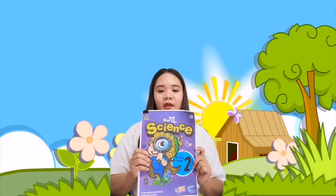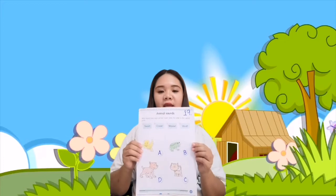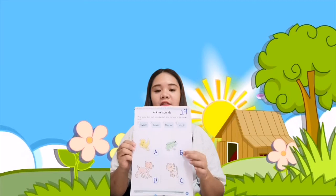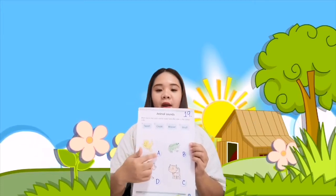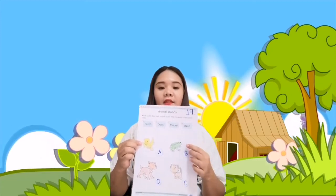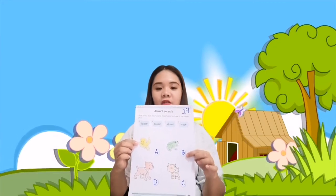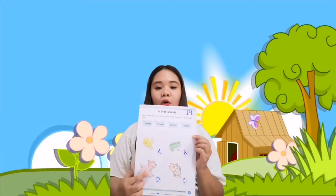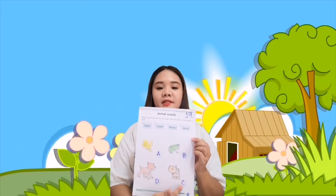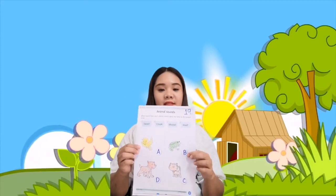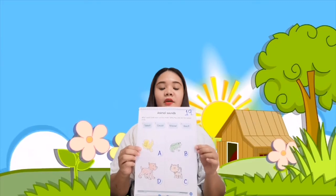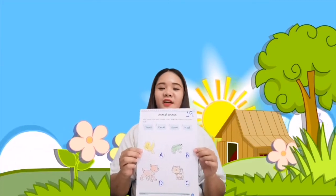All right, so let's go on to our next activity, which is answering our science book. I want you to open your science book to page 19. So it says here that you need to write the letters of the sound of each animal. For example, A for the bird, it's tweet — letter A inside the circle. The frog's sound is croak. The dog is woof, letter D. And cat is letter C for meow. You need to write the correct letter of the animal's sound inside the circle. This is page 19 of your science book. You can pause the video so that you can follow the correct answer.